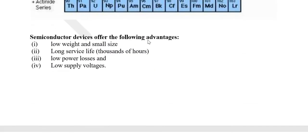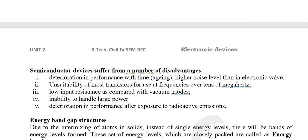Some advantages and disadvantages are there for semiconductors. The advantages are as follows: semiconductors have low weight and small size. The service life of a semiconductor is very long — thousands of hours. The power losses are very low in semiconductors, and the supply voltage required for a semiconductor is also low.